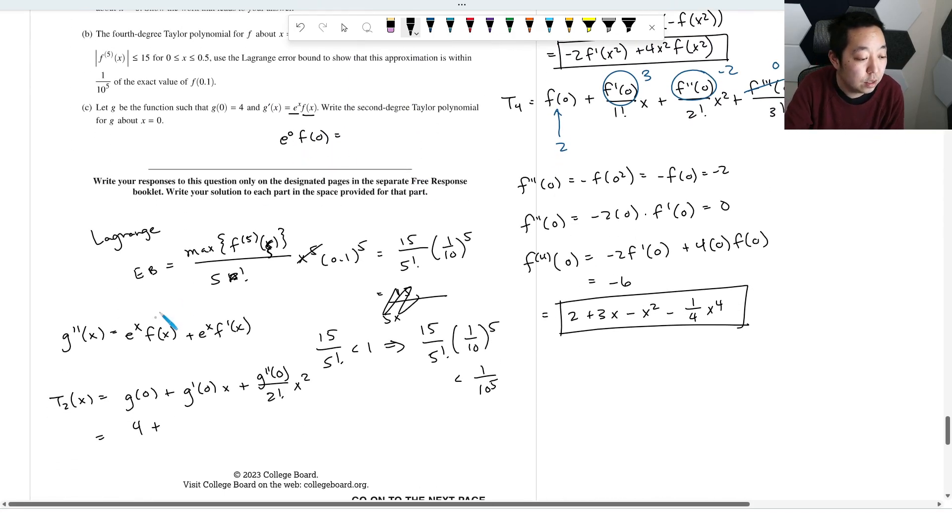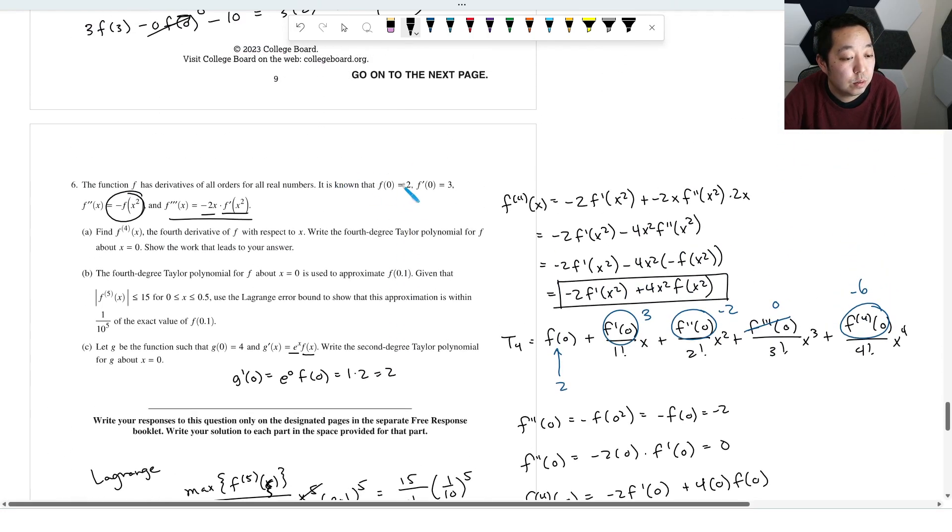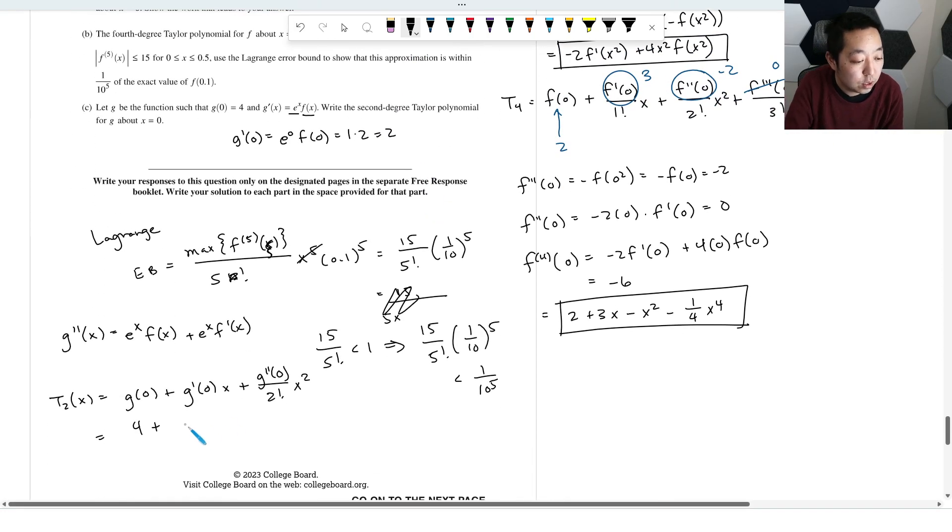So G(0), they tell you is 4. G'(0) is e⁰·f(0). What is f(0)? f(0) is 2, e⁰ is 1. So let me just write this out. G'(0) is this, that's 1 times 2, so that's 2. f(0) is 2, so that's 2. So it's going to be 2x, and then G''(0) is going to be this thing.